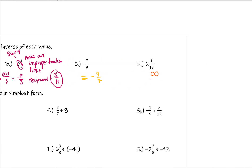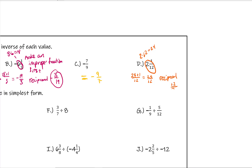Why don't you give example D a try as well? For example D, first you need to do 2 times 12, which is 24. That means it becomes 24 plus 1 over 12, which is 25 over 12. So the reciprocal is going to be 12 over 25, because we flip it.